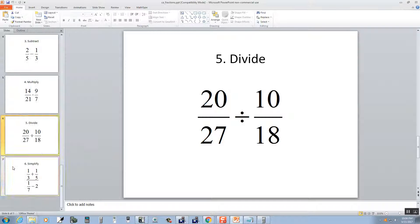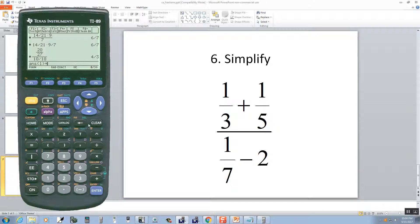And one last one. This is a complex fraction, a fraction inside of a fraction. The trick to that is to put parentheses around the top, parentheses around the bottom. So I'll do a beginning parentheses, 1 divided by 3, plus 1 divided by 5, closing parentheses,